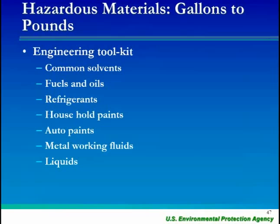The hazardous materials engineering toolkit — the gallons-to-pounds converter — has a list of common solvents, fuels and oils, refrigerants, household paints, auto paints, etc. You click on a category and find your specific material to do the conversion. This is very useful for people on the ground trying to do that conversion and understand what they can count. Once all tools are integrated, this will only need to be done once rather than duplicated across separate tools.